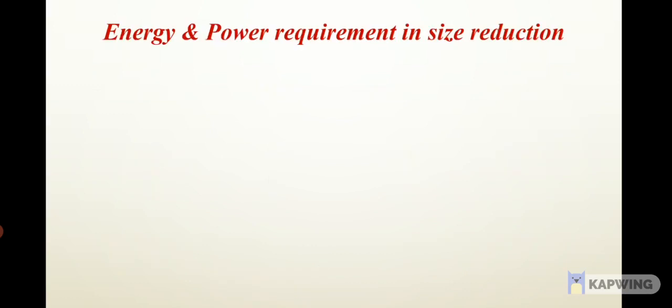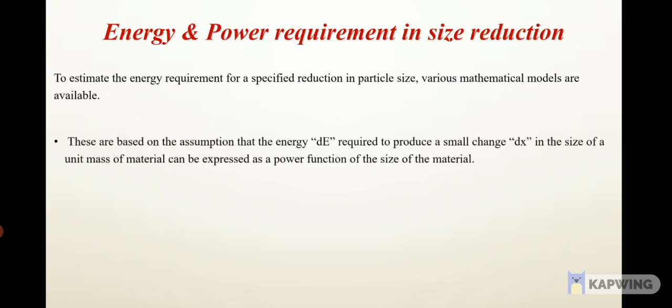Next is energy and power requirement in size reduction. This topic is very important for a GATE aspirant. Here, we are going to study about three laws: Rittinger's law, Bond's law and Kick's law. Before studying that, let's move to the basics of this energy and power requirement. To estimate the energy requirement for a specified reduction in particle size, various mathematical models are available. These are based on the assumption that the energy dE required to produce a small change dx in the size of a unit mass of material can be expressed as a power function of the size of the material. We can write it as dE/dx = -k/x^n. We will mention this equation as number 1.